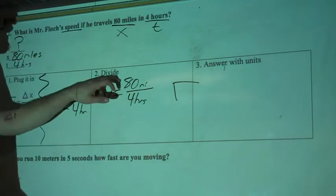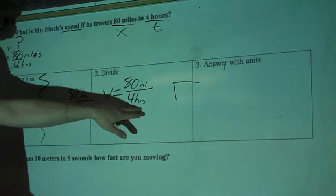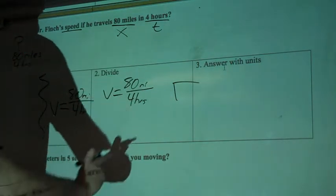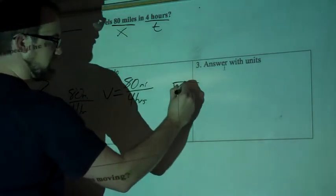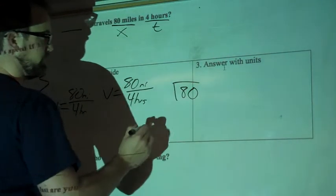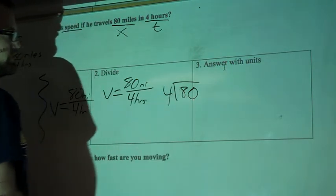Remember, you're going to think about the 80 as a person riding on this ridiculously disappointing looking monster. The 4. The 80, the person on top, goes inside of this. And then the 4 is going to go on the outside of the division sign.